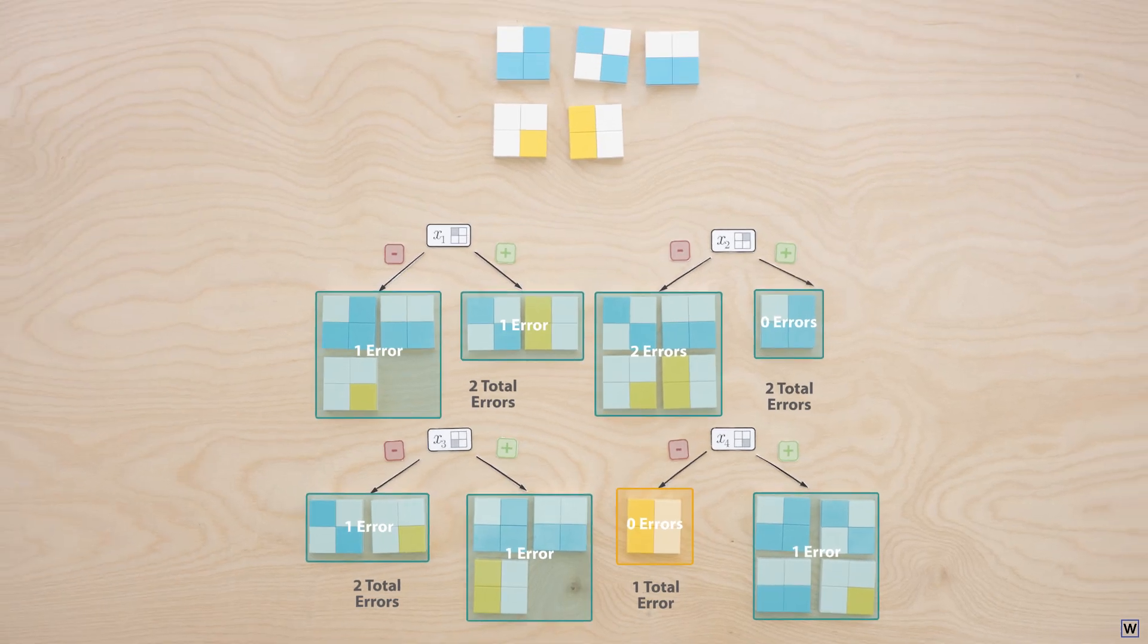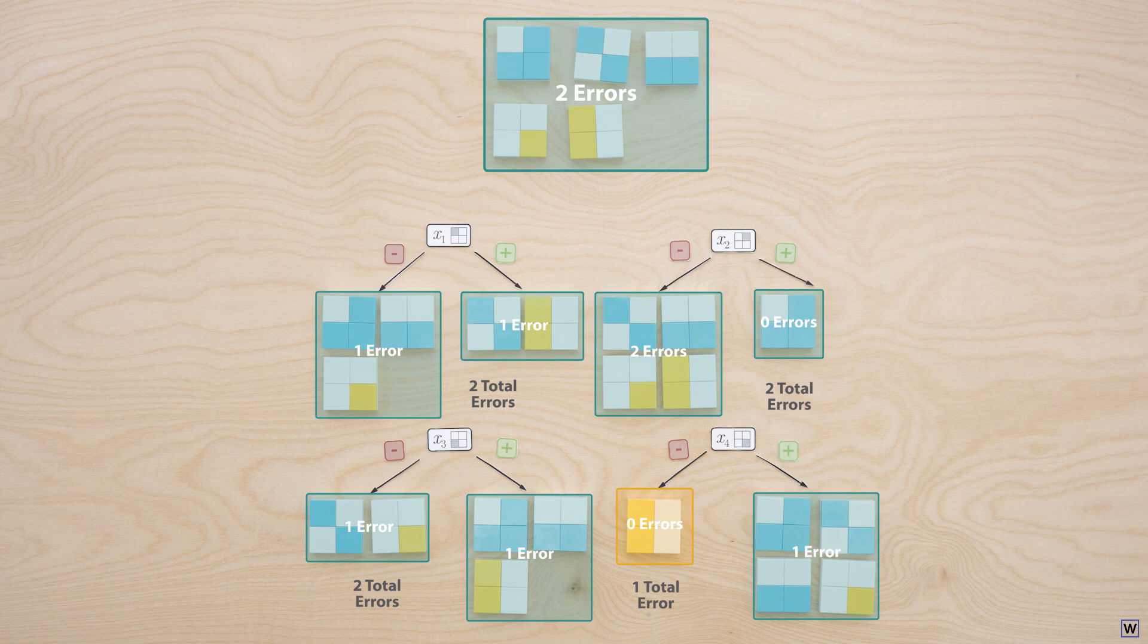Notice that before we split, using our majority labeling approach, we would have labeled all examples as positive and made two misclassification errors. So splitting on variables X1, 2, or 3 kept our number of misclassifications exactly the same, while splitting on X4 reduced our number of misclassification errors from 2 to 1.